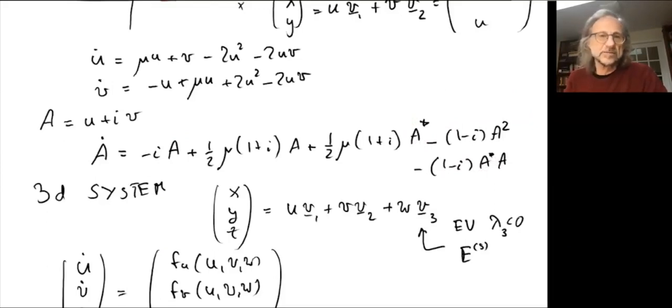So that's center manifold reduction for Hopf bifurcation. That's what we're going to do next time.